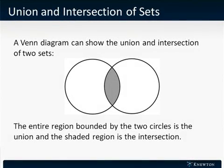A Venn diagram is often used to visualize sets and their unions and intersections. In this Venn diagram, the shaded gray area represents the intersection of the two sets, because it's in both circles. The union of the two sets is represented by the entire area that is bounded by the two circles.